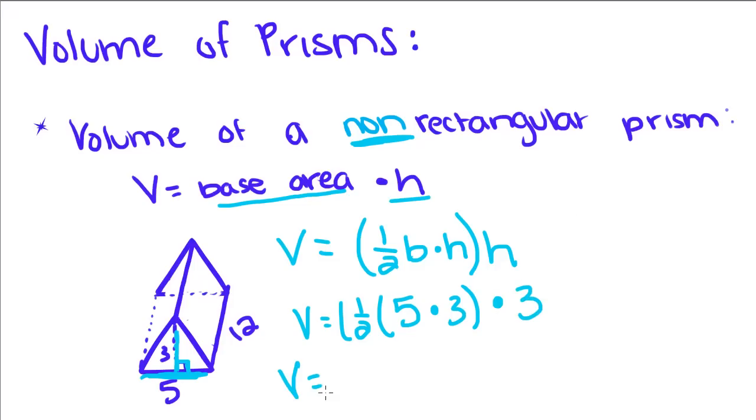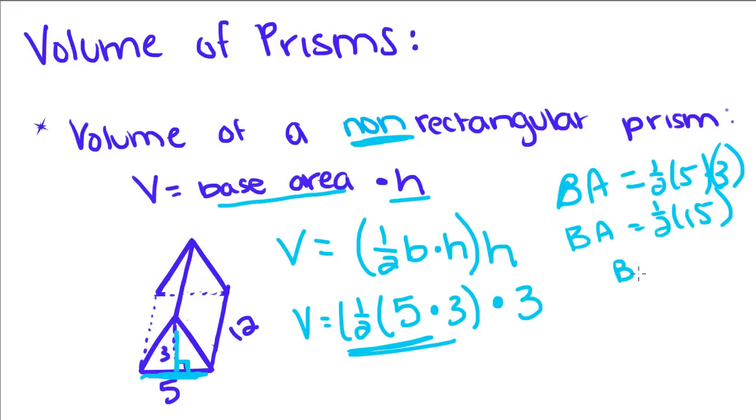So first, what we're going to do is find the area of the base, which we're just going to call BA. So one-half, five times three. One-half of five times three is fifteen. So our base area is fifteen-halves.